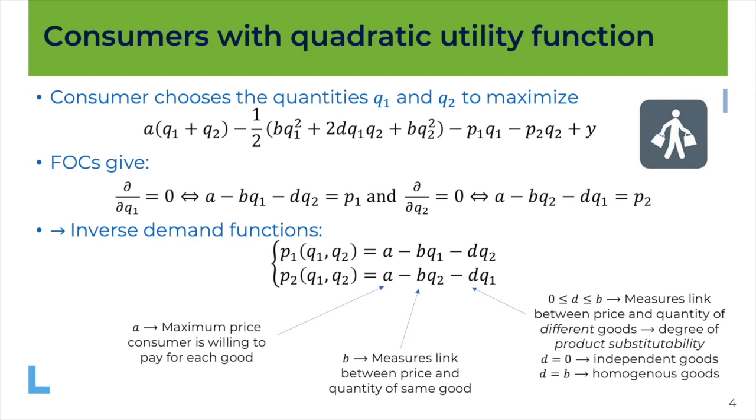So it's also a measure of the degree of product substitutability. When d is equal to 0 the two goods are totally independent of one another, meaning that the price of good 1 for example is only influenced by the quantity of good 1 but not by the quantity of good 2. So that's one extreme case. d is equal to 0 independent goods.